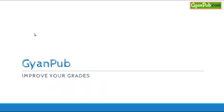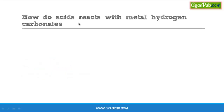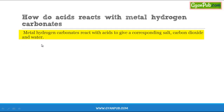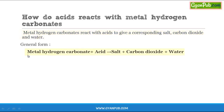Let us discuss the reaction between metal hydrogen carbonates with acids. When metal hydrogen carbonates are reacted with acids, the formation of salt, evolution of carbon dioxide, and formation of water takes place. Metal hydrogen carbonates react with acids to give a corresponding salt, carbon dioxide, and water. The general form of this reaction is: metal hydrogen carbonate + acid → salt + CO2 + water.